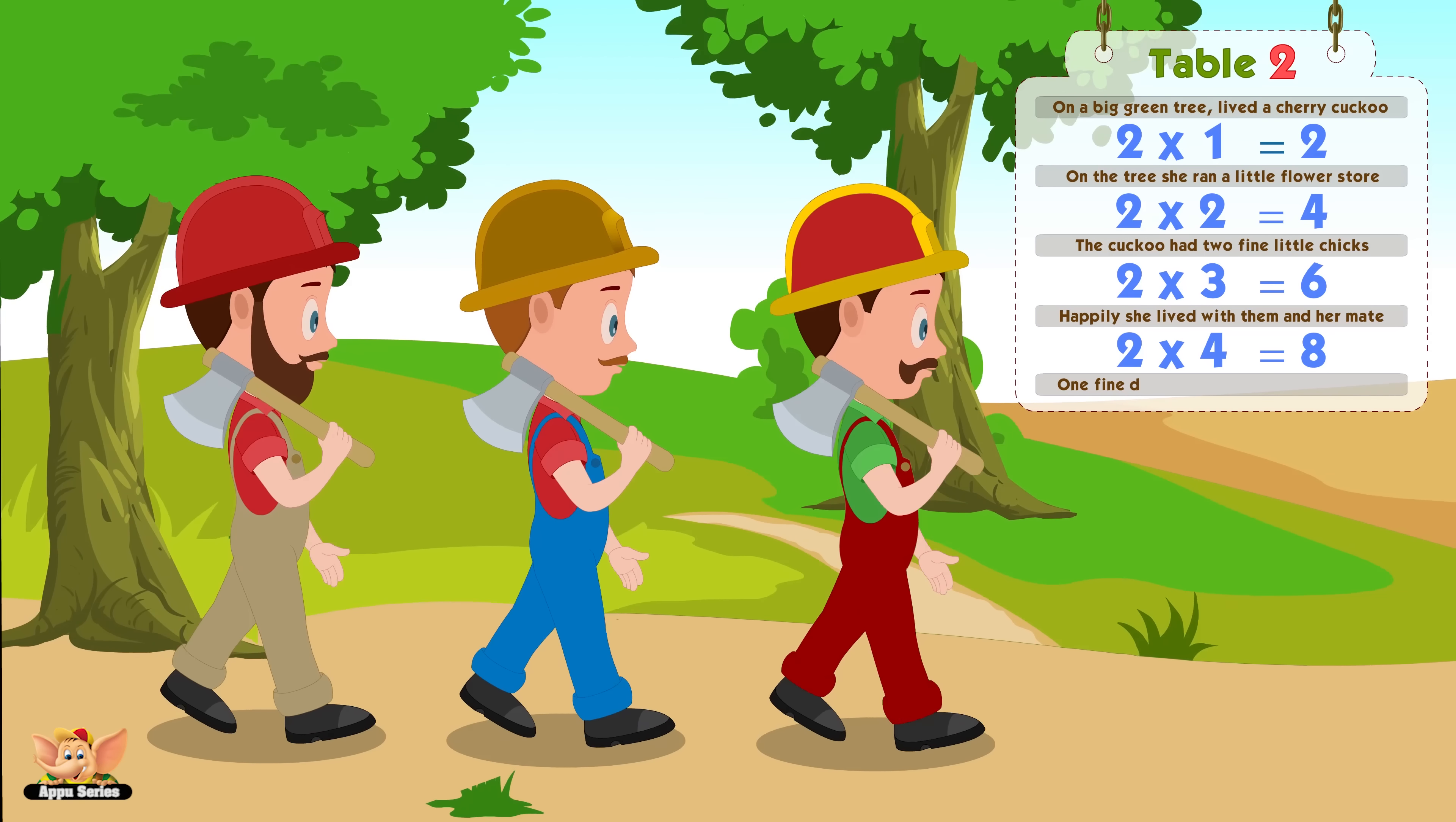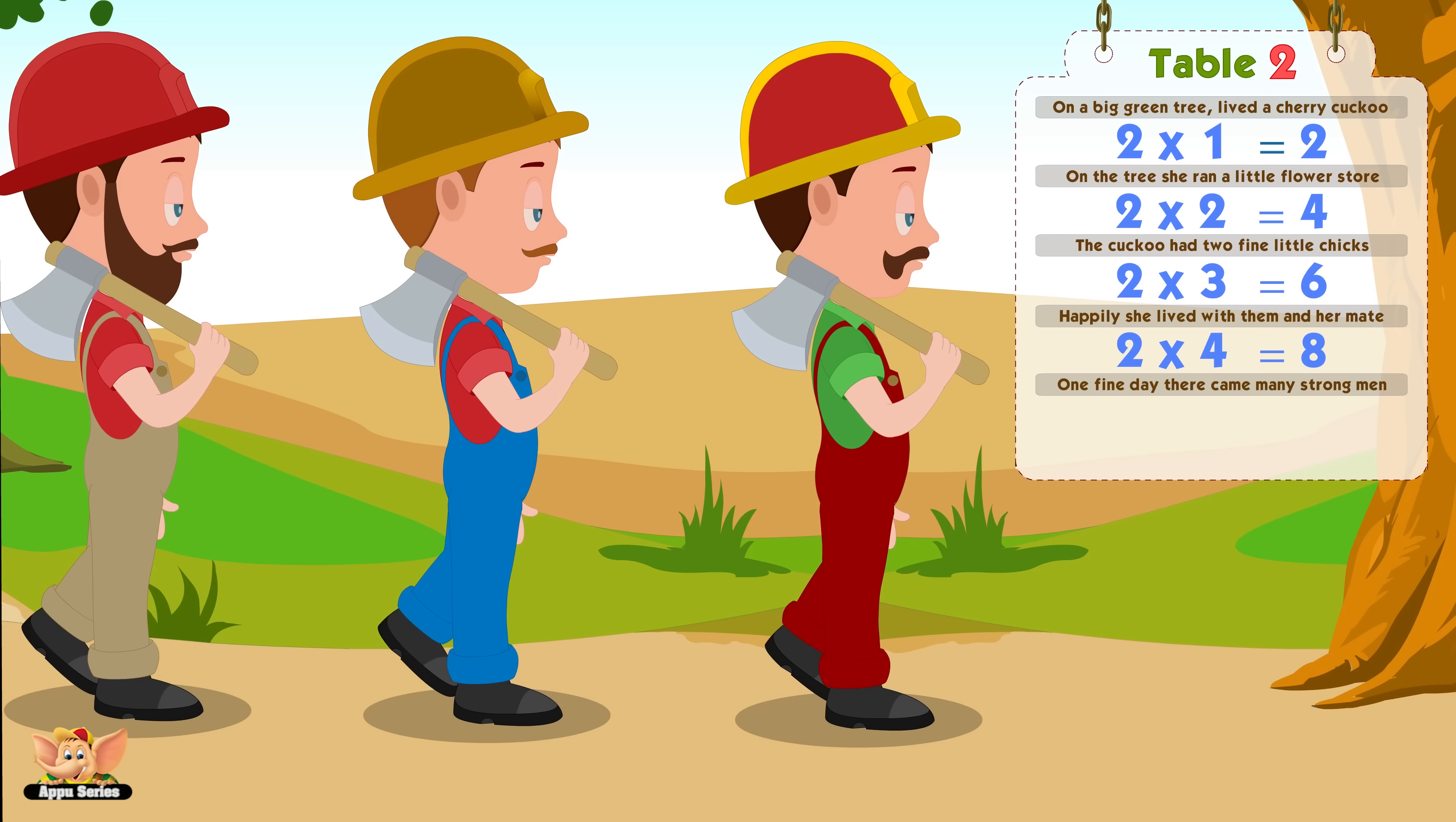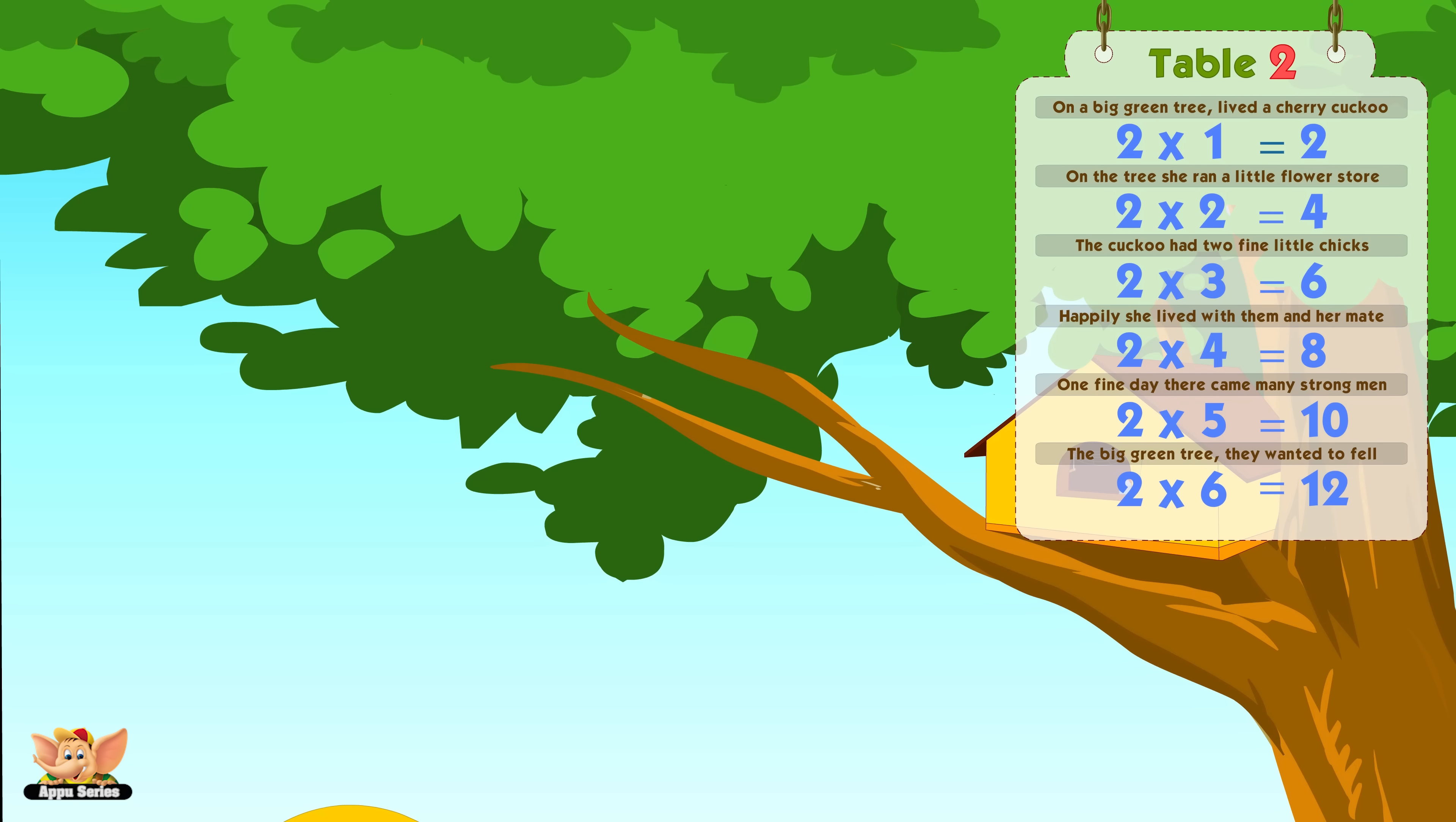One finds a fair cave, many strong men. Two fives are number ten. The big green tree they wanted to fell. Two sixes are number twelve.